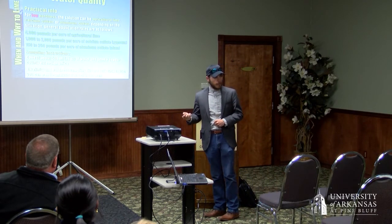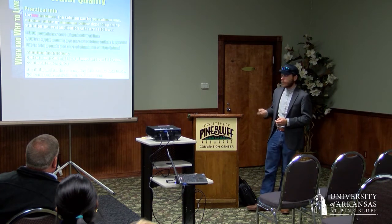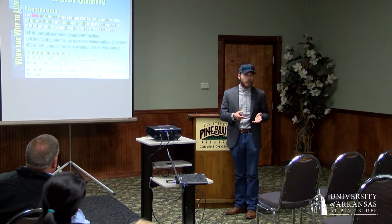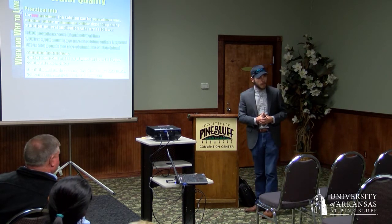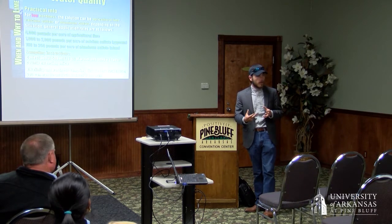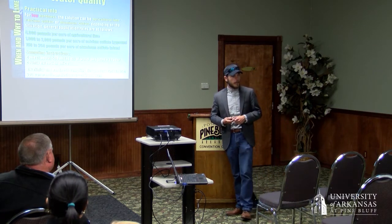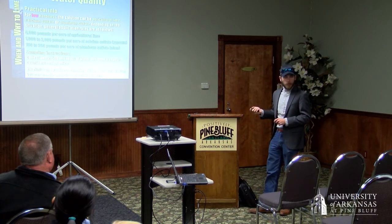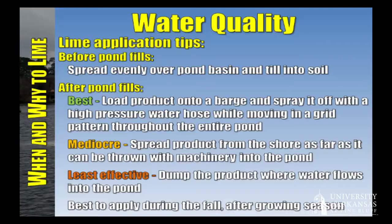Since alkalinity and hardness are usually about the same concentration, if you have a hardness problem you've probably got an alkalinity problem too. So if you want an aluminum sulfate treatment, you often need to add a lime product first to offset its effects and protect the fish. For water samples, just send a water bottle to the county extension office and they'll measure it for you.